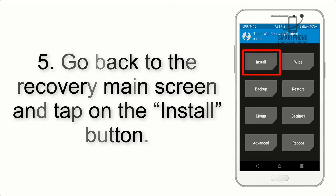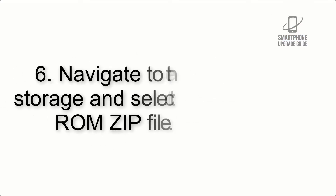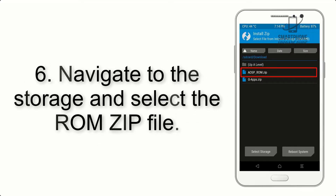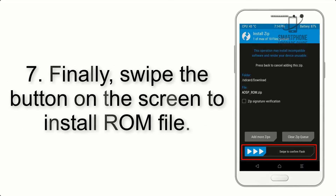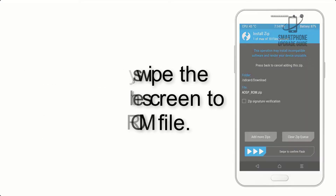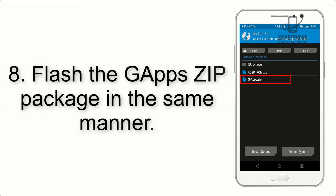Step 5: Go back to the recovery main screen and tap on the Install button. Step 6: Navigate to the storage and select the ROM zip file. Step 7: Finally, swipe the button on the screen to install the ROM file.